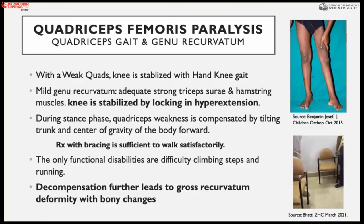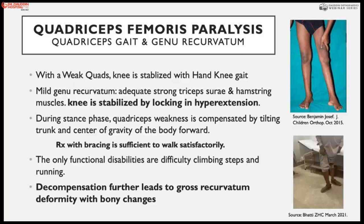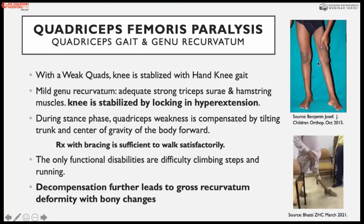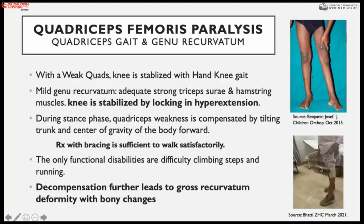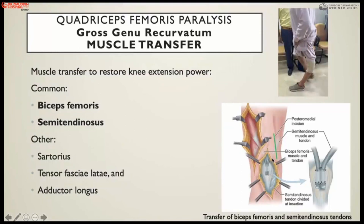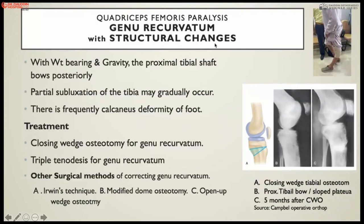Treatment in the early state is bracing, which gives good results. For severe genu recurvatum, surgical procedures include muscle transfers — commonly biceps and semitendinosus transfer to the patella. Sartorius transfer, tensor fascia lata transfer, and adductor longus transfers are also options, but biceps and semitendinosus combined transfer is most popular. When there is significant structural deformity, posterior closing wedge osteotomy is performed because in the chronic stage there is a procurvatum bony deformity of the knee.